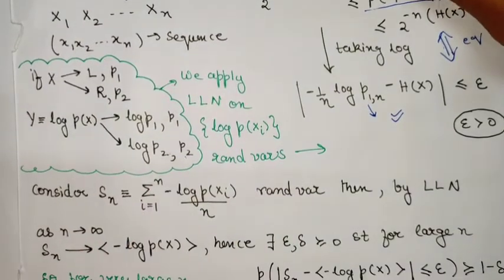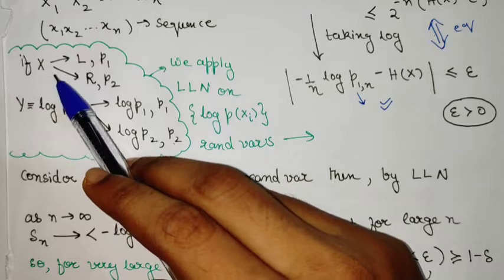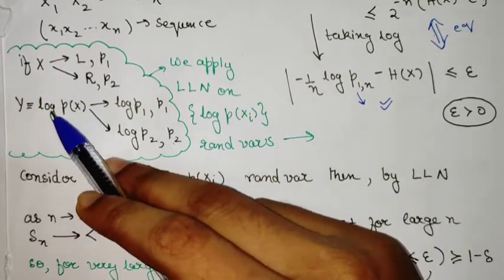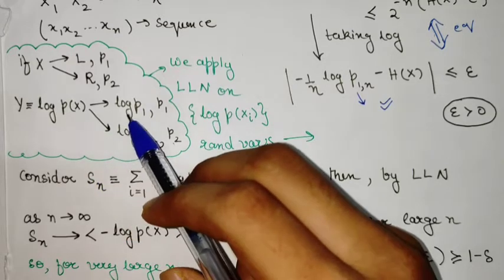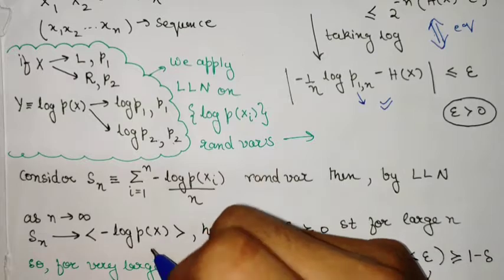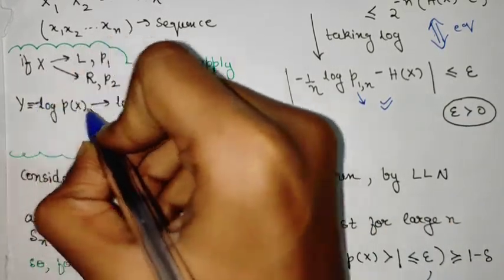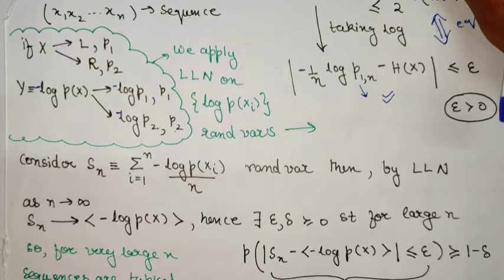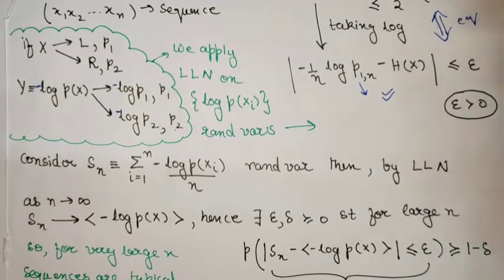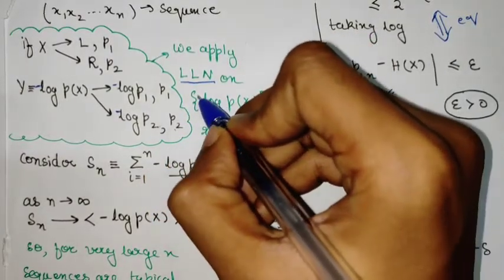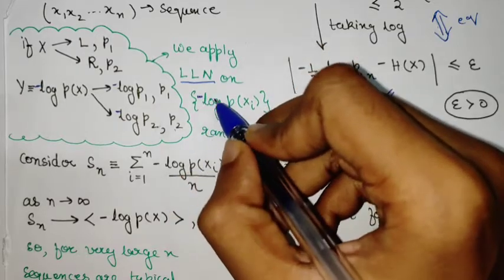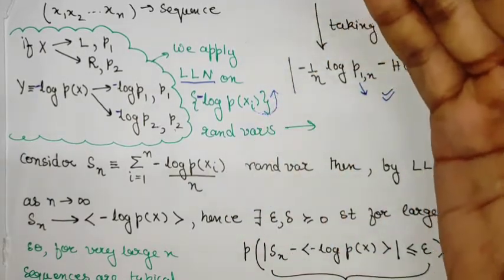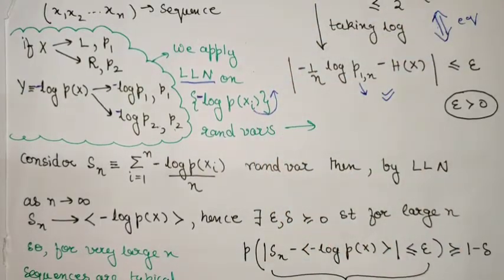Suppose we have a random variable X that can take values 'left' or 'right' with probabilities p1 or p2. We can define a new random variable log p(X), taking values log p1 or log p2 with those probabilities, and also define -log p(X). These random variables are derived from the main random variable, and we will apply the law of large numbers to the distribution of -log p(X_i), where i indexes the i-th trial in the sequence X_1 to X_n.